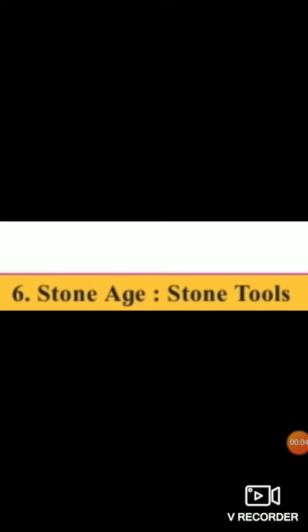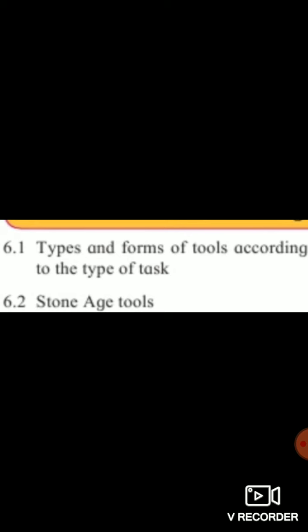Chapter 6: Stone Age, stone tools. Stone Age — us samay ke log jo pattharon ka use karte the. And stone tools — yaniki stone se, pattharon se bane hue hathyaar, woh type ke hathyaar banate the. Section 6.1: Types and forms of tools according to the types of tasks. Jo kaam karna hai, us kaam ke liye konsa pattharon ka hathyaar banate hain — stone tools. Yeh lesson mein aage padhenge.